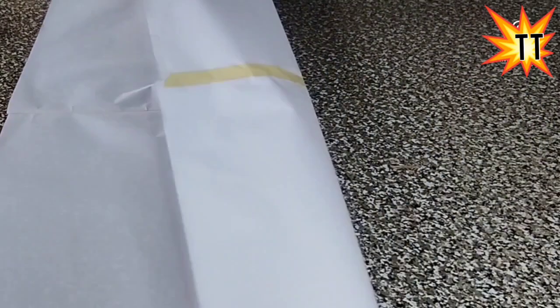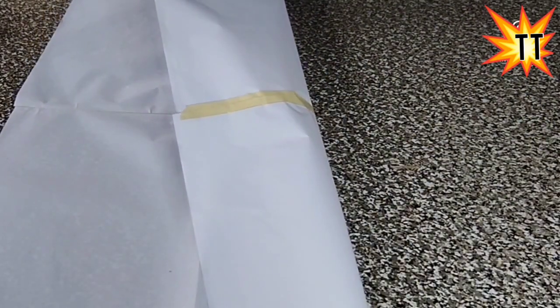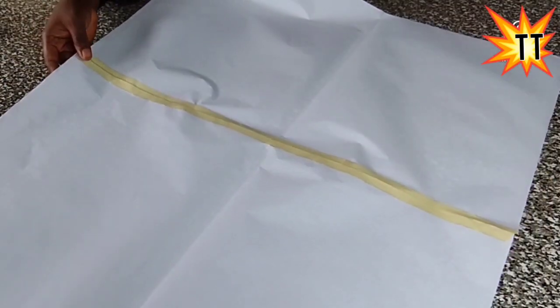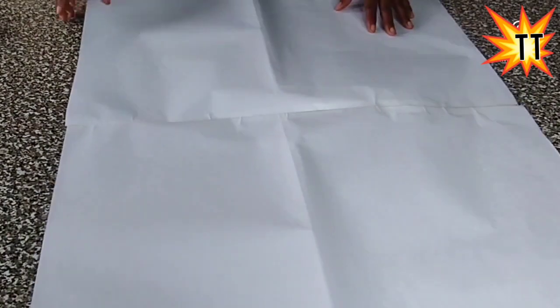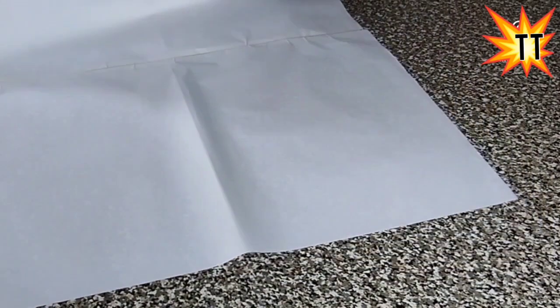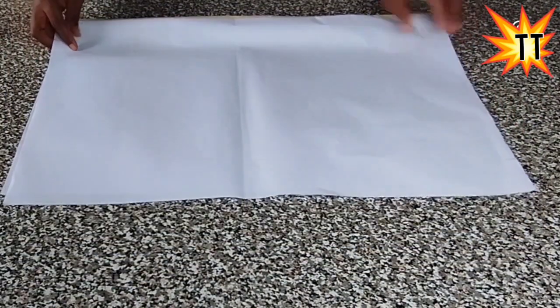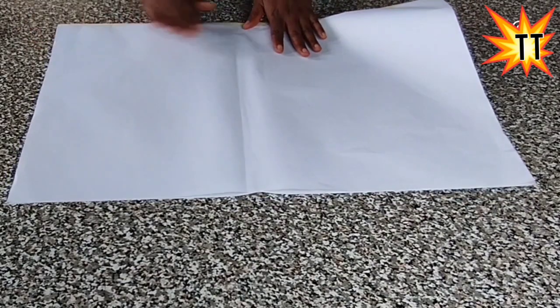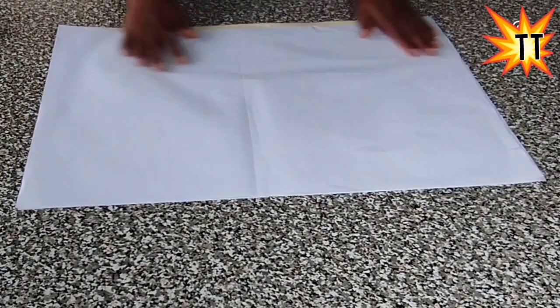Now the first thing we do here is because my pattern paper is small, I have to join it with masking tape. You can see I joined it to give me the bold one so that I can achieve what I want. So I'll have to fold it into two, fold it like this and draft the sleeve.